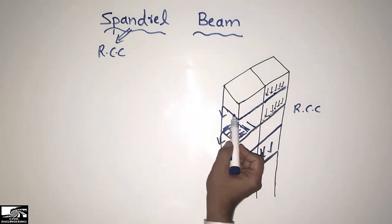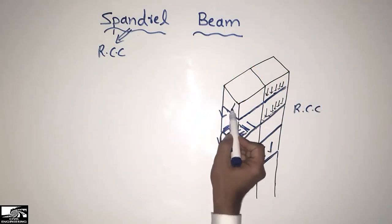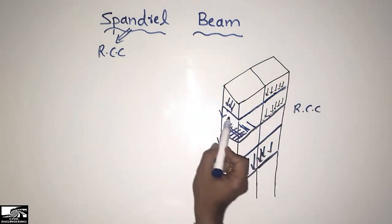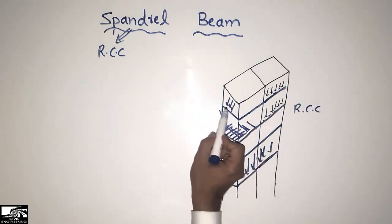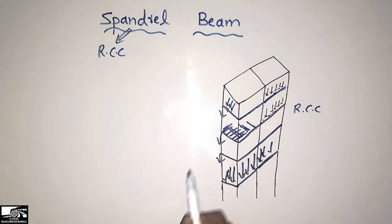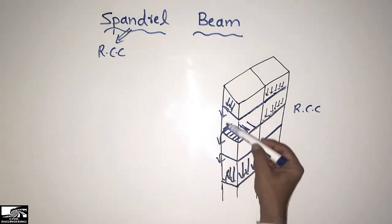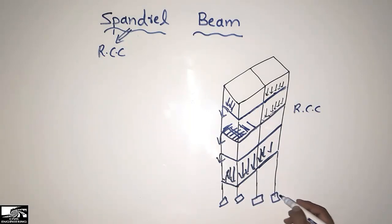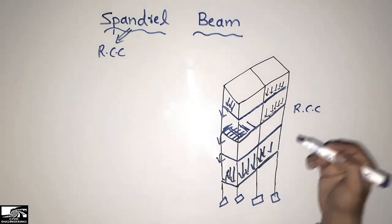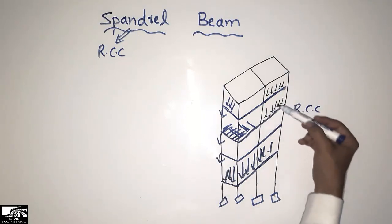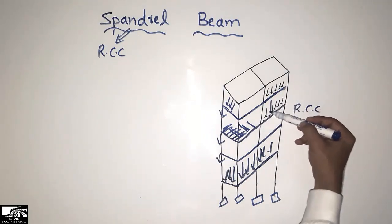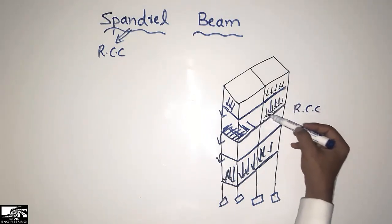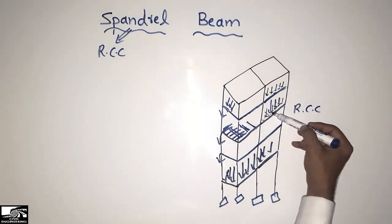Because the beams are connected with the column, they transfer the load into the column easily. As you can see, the load from the wall comes to the beam at the outside, and they transfer it to the columns. In this way the whole load is transferred into the footing — it may be any type of footing, combined footing or isolated footing.